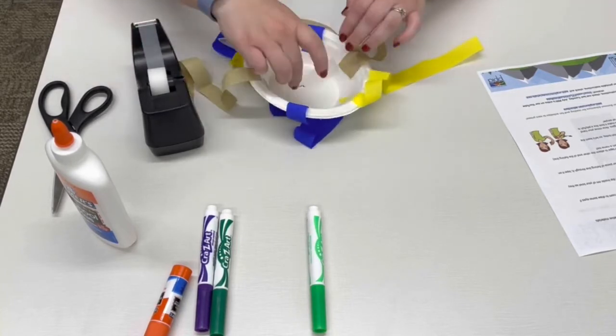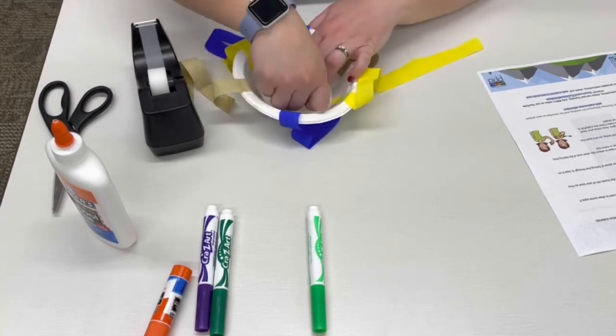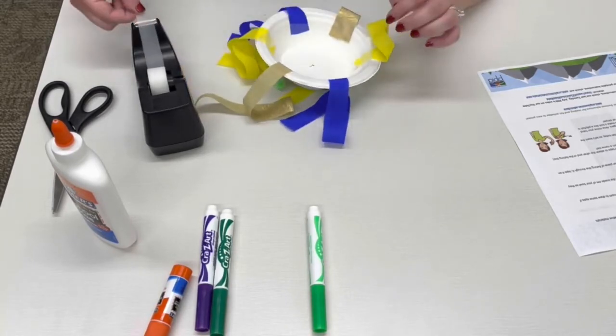Use a piece of tape to attach your piece of fishing line to the bottom of your jellyfish bowl.